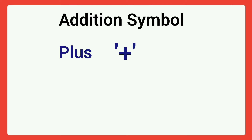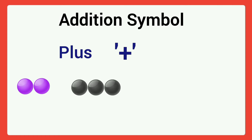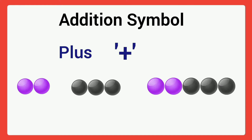Plus is the symbol of addition. For example, here two balls. We add three balls more. Then total it is five balls. We can say that two plus three equal to five. That is first set two balls plus second set three balls equal to total five balls.